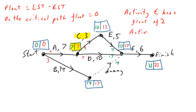Activity C actually has a float of two. The reason is that the float applies to the node, and we can see the difference of two in the back pass — that's the 9 and the 7, showing a gap. If you follow the book's advice blindly you wouldn't say that C has a float, but there have been past exam questions on this exact point where students make that mistake.